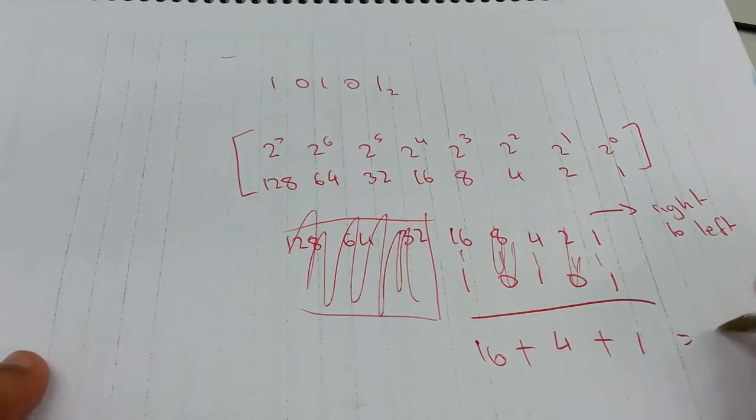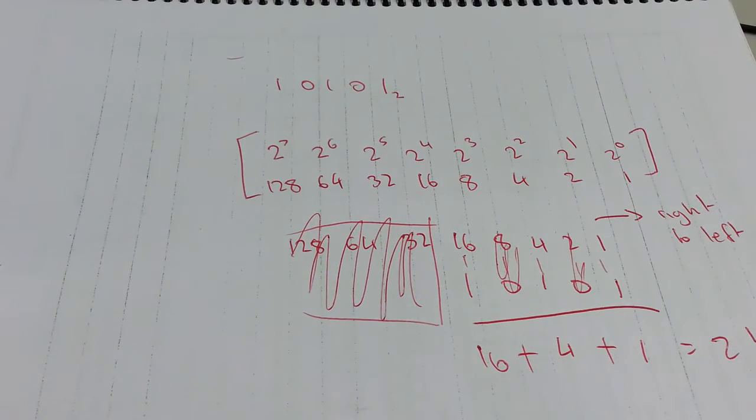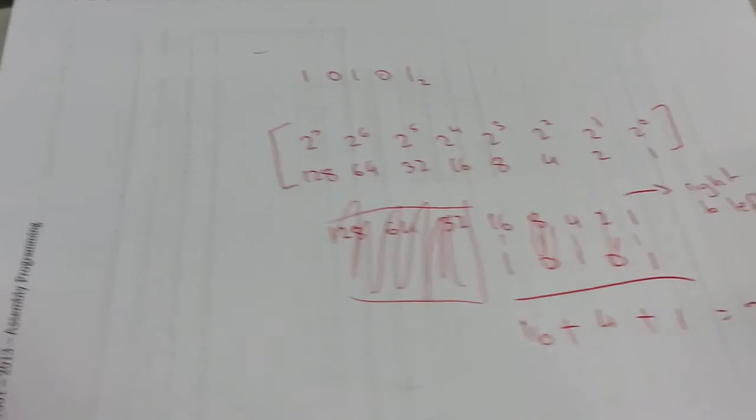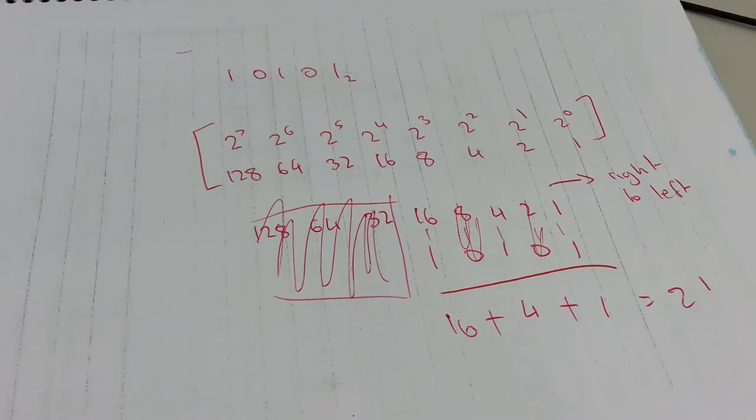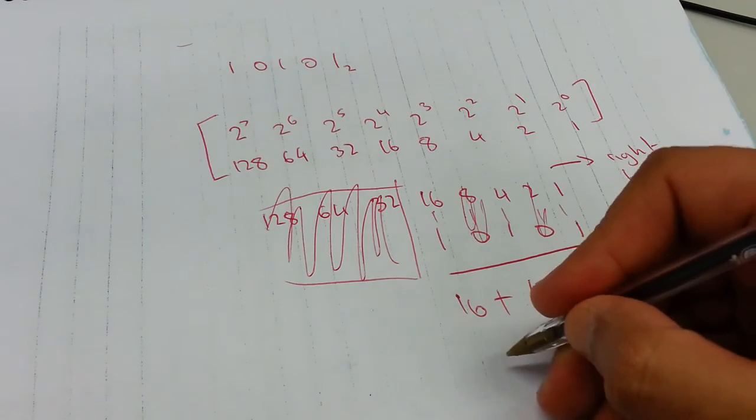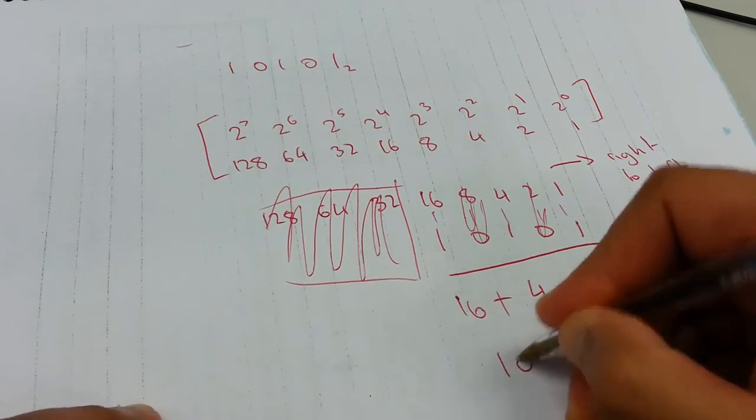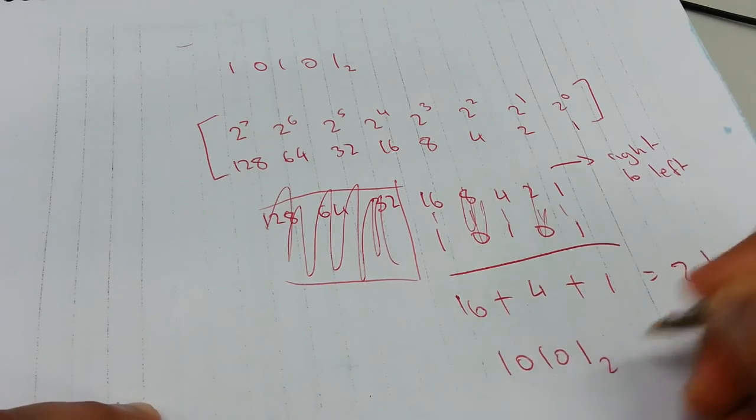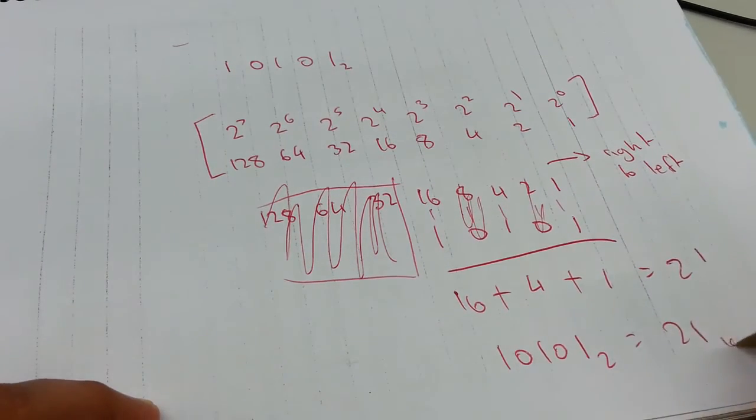And the answer is 21. So we can say 1 0 1 0 1 base 2 equals 21 base 10.